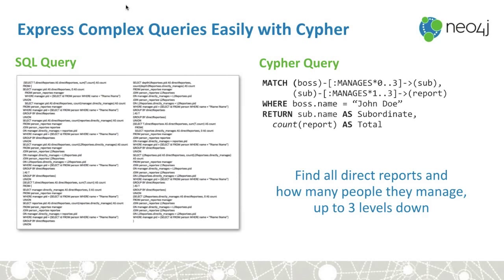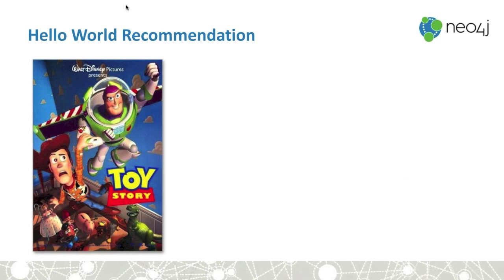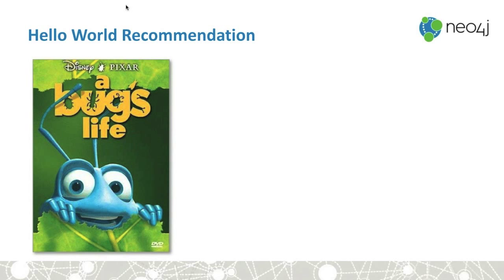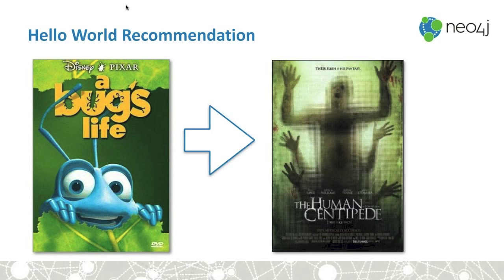Let's build a Hello World recommendation. We have just watched Toy Story, loved it, and we want to be recommended something like A Bug's Life — similar idea, similar type of theme. That makes a lot of sense. But if we watch A Bug's Life, what we don't want is to be recommended The Human Centipede — that would be a horrible recommendation for a movie to watch with your kids, even though they're about similar things.